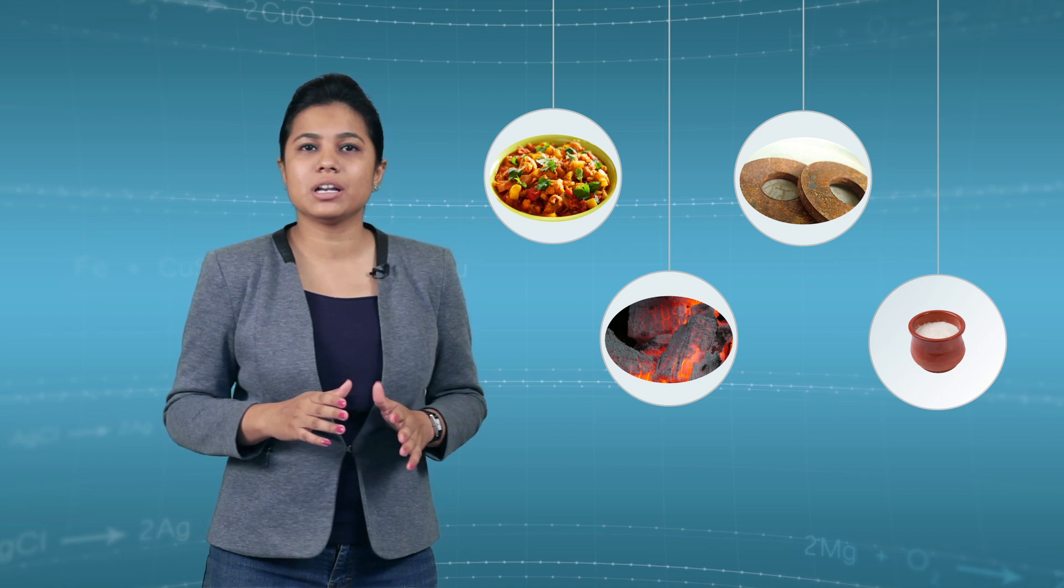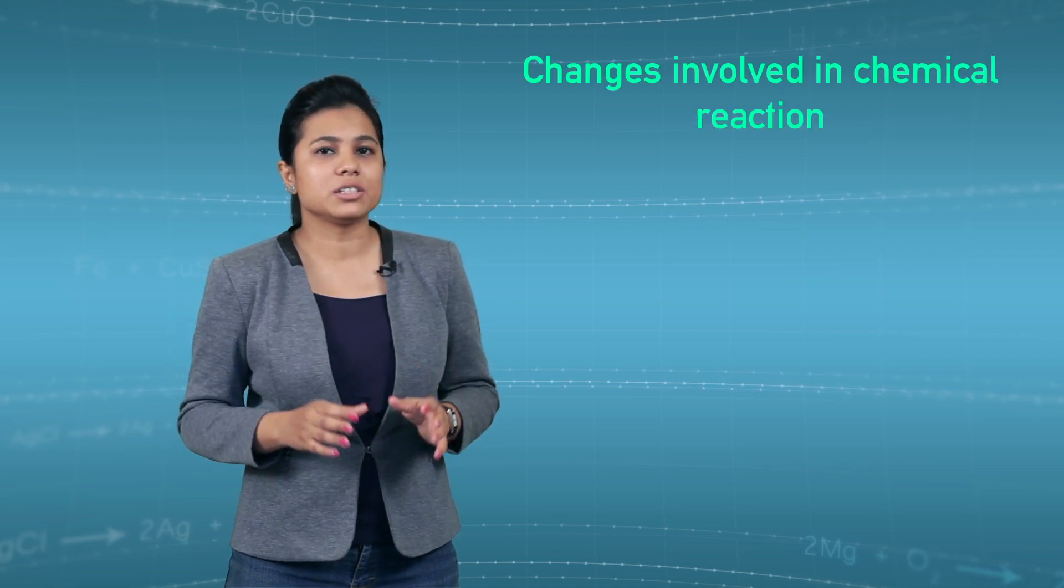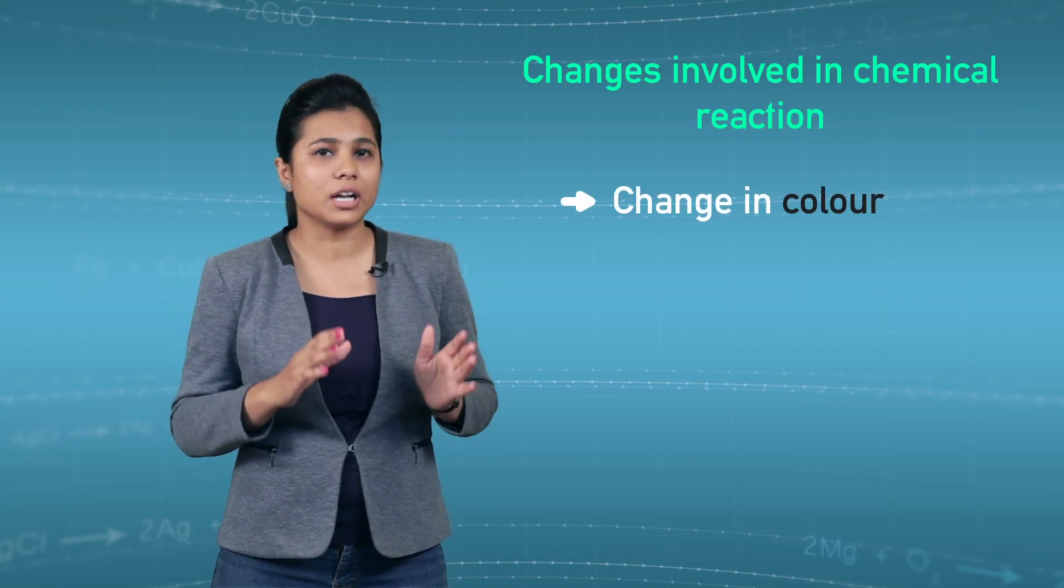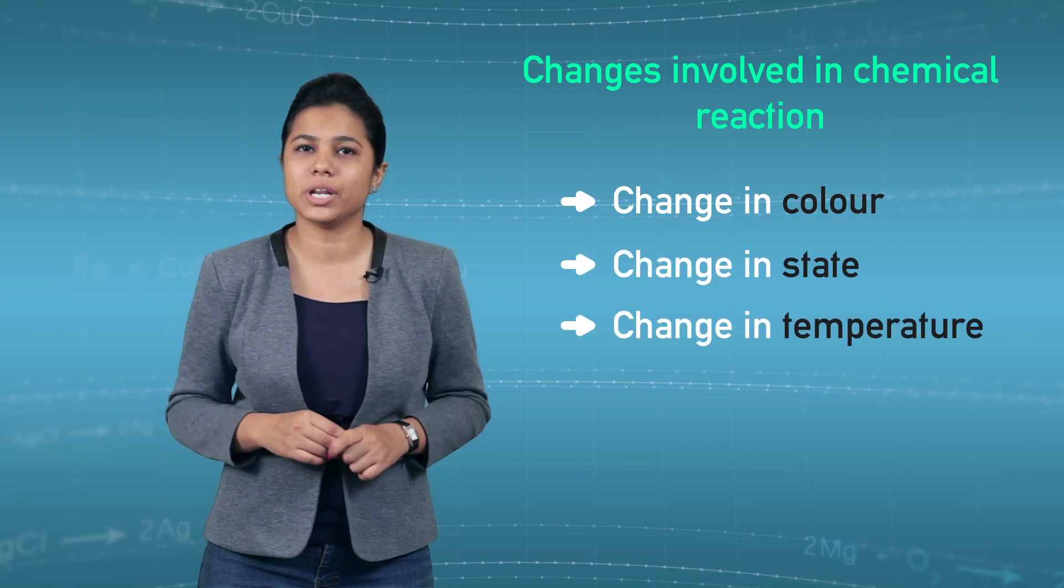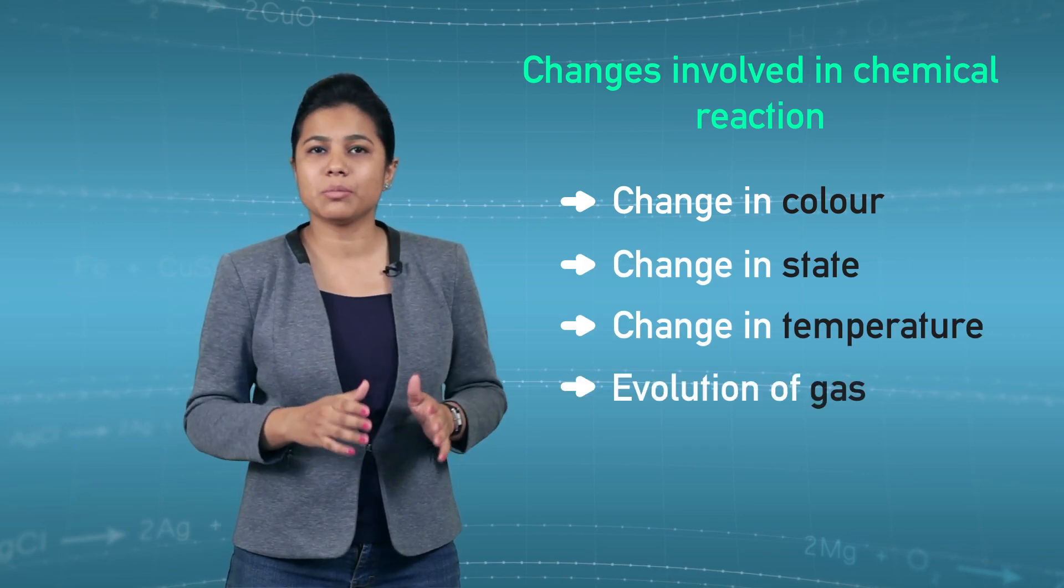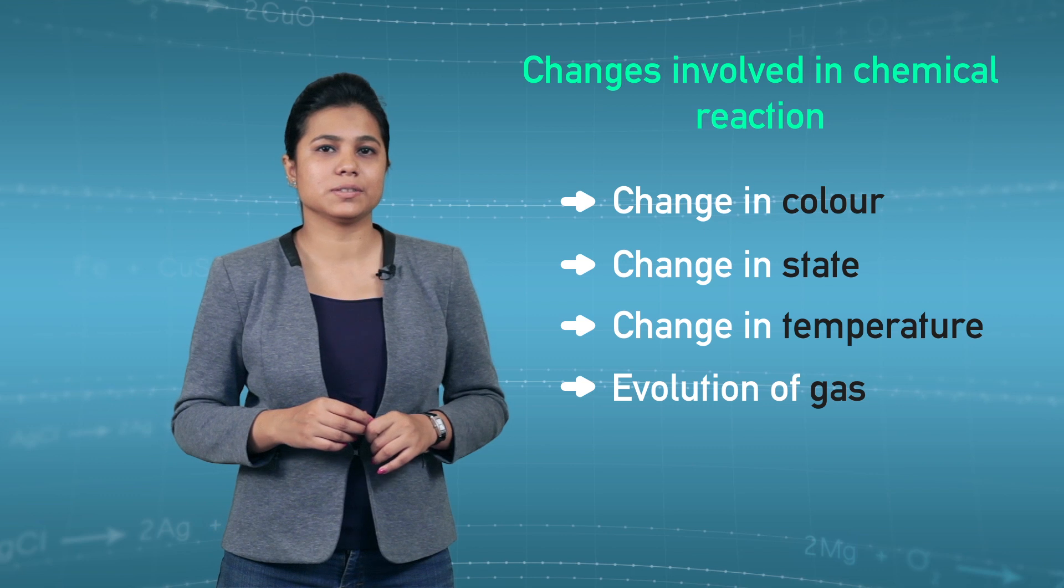These chemical reactions affect us, so we are going to study what are these chemical reactions. These chemical reactions involve changes in color, state and temperature. There is also sometimes evolution of gases. So let's conduct an experiment to find out what are the changes which go in the chemical reactions.